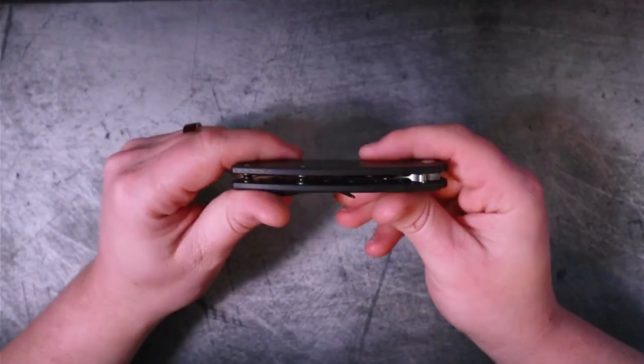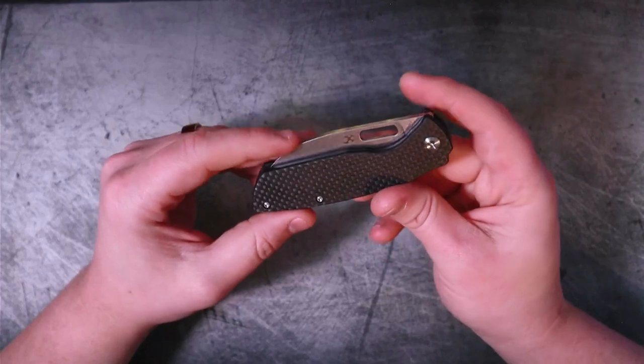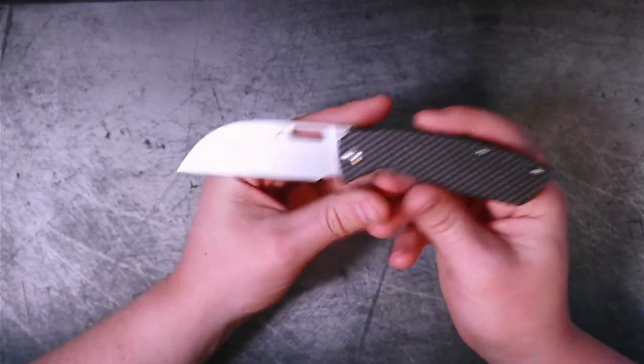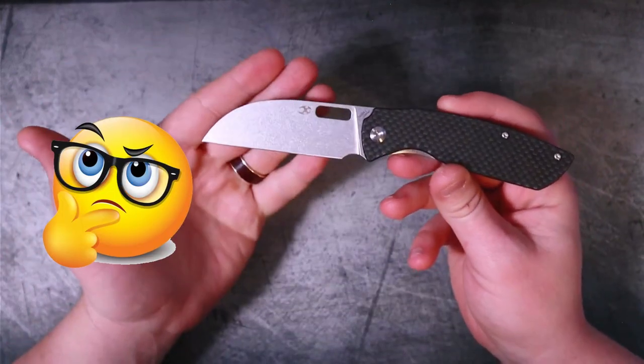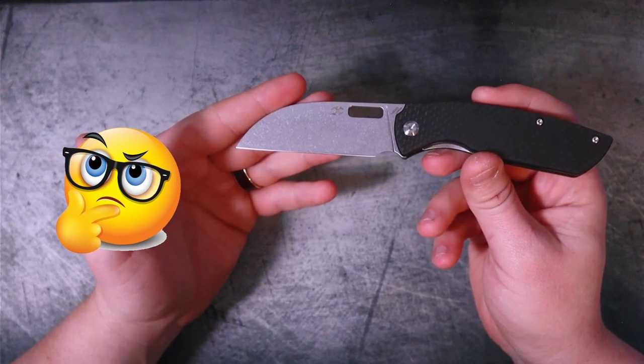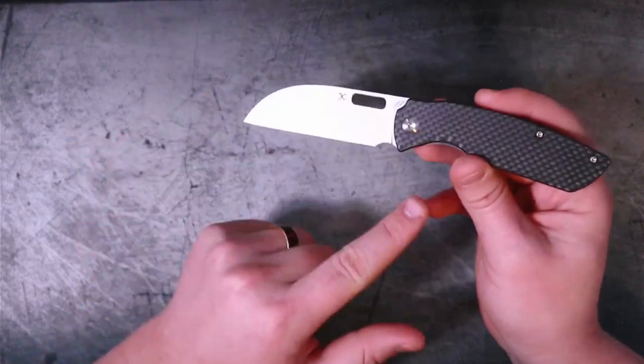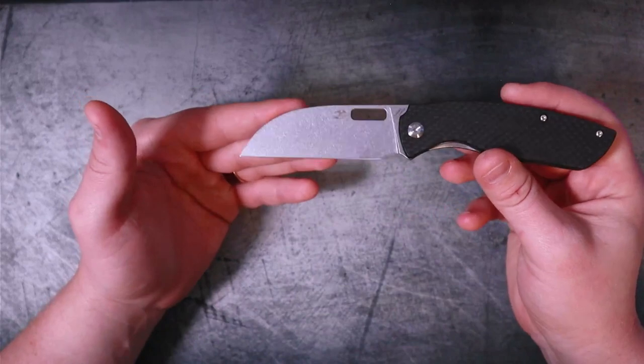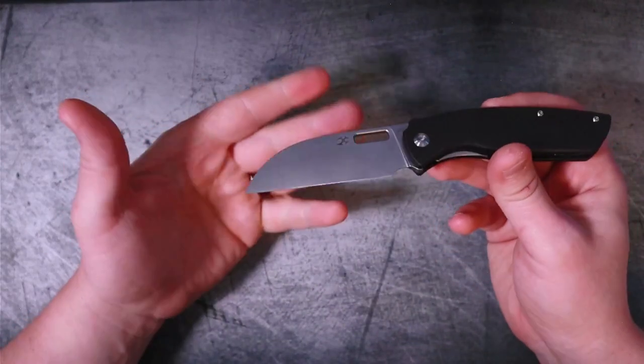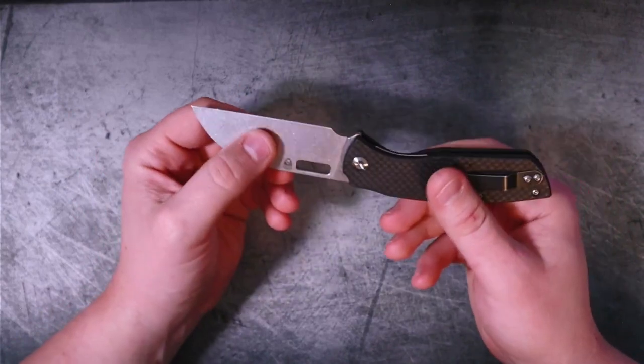If you skipped the intro, this did come by way of the Apex Pass Around Group, so no, this is not mine. I do not get to keep this, I'm just borrowing this for the sake of review. Let's start off. Concept Convict.